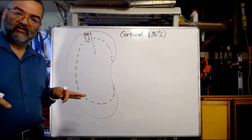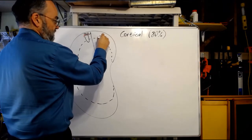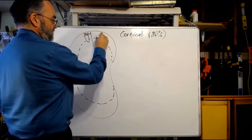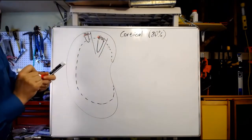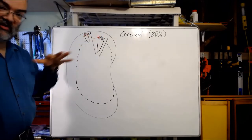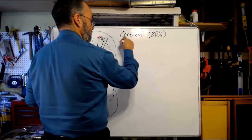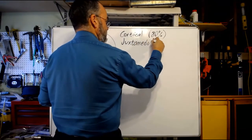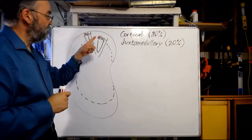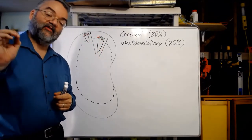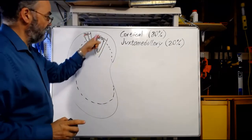Cortical nephrons make up about 80% of the nephrons in your kidney. They are entirely or almost entirely within the cortex. But there's another kind. Those start in the cortex, but their loops of Henle go deep into the medulla. In that other kind, the glomerulus, proximal, and distal convoluted tubules are still in the cortex, although near the bottom, but the loop of Henle goes deep down into the medulla. That kind is called a juxtamedullary nephron.